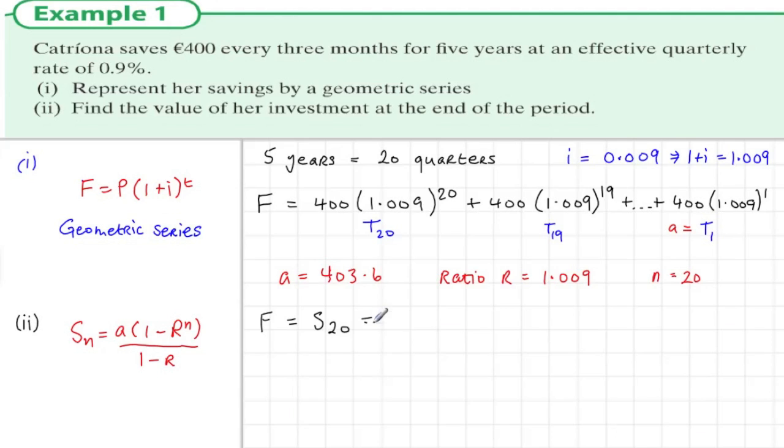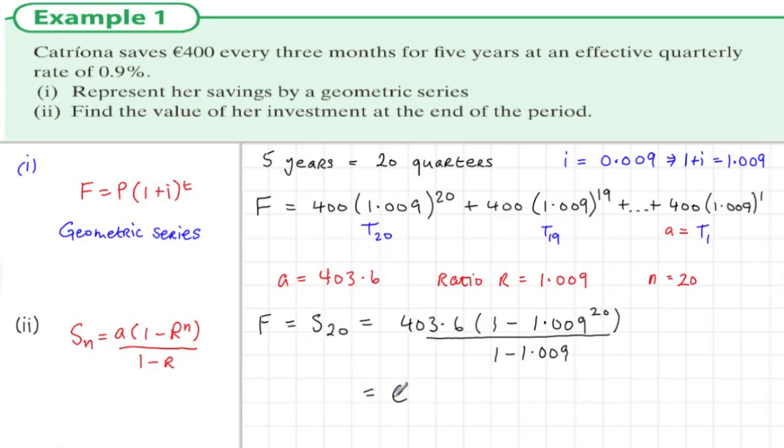So the future value is the sum of this series. We sub in the values we have: 403.6 times (1 minus 1.009 to the power of 20) all divided by (1 minus 1.009). So then we sub this value into the calculator and we get the answer 8889 euros.